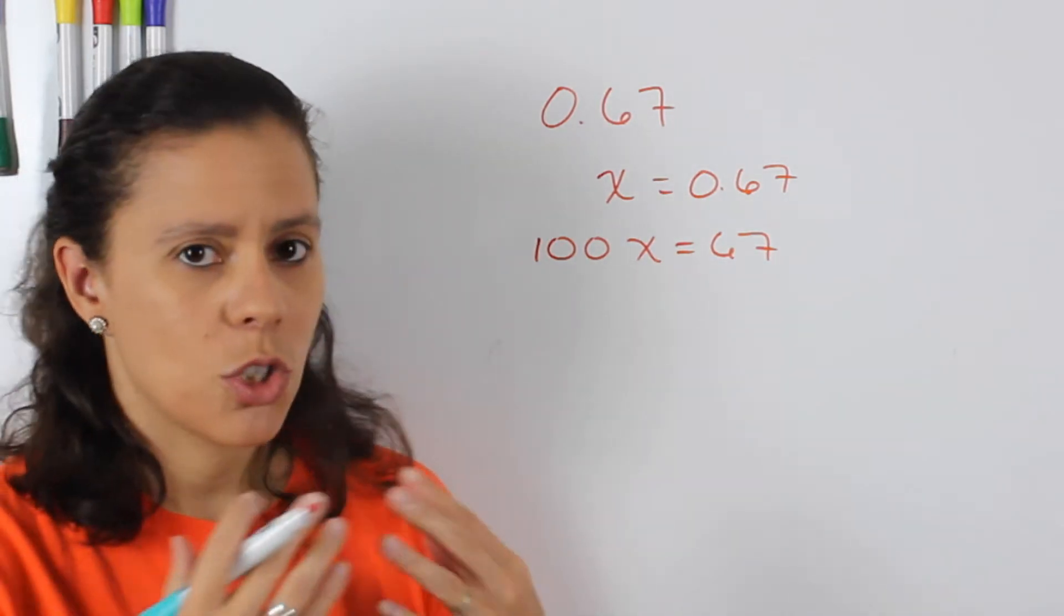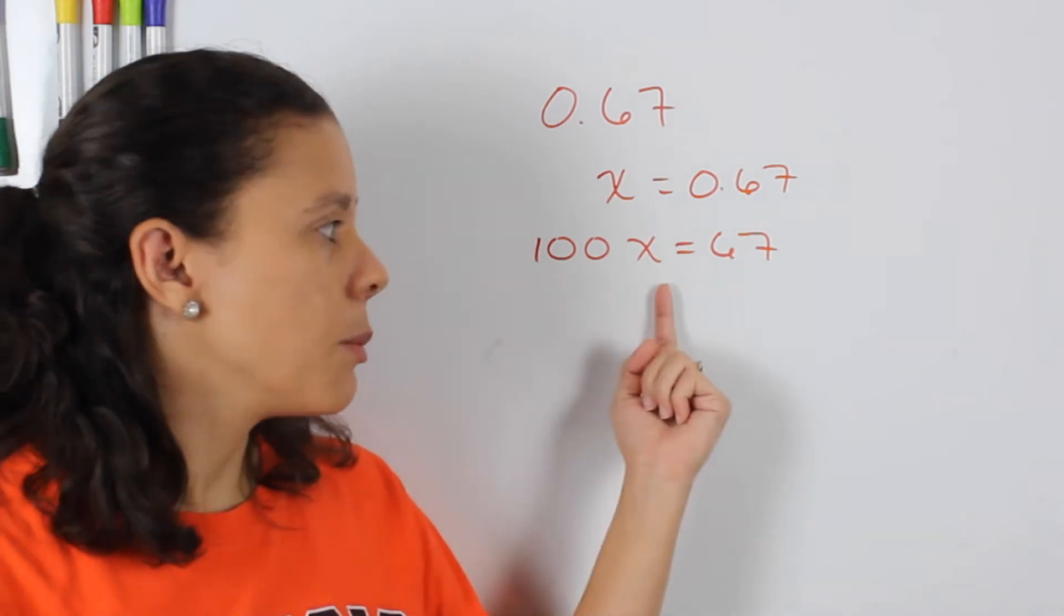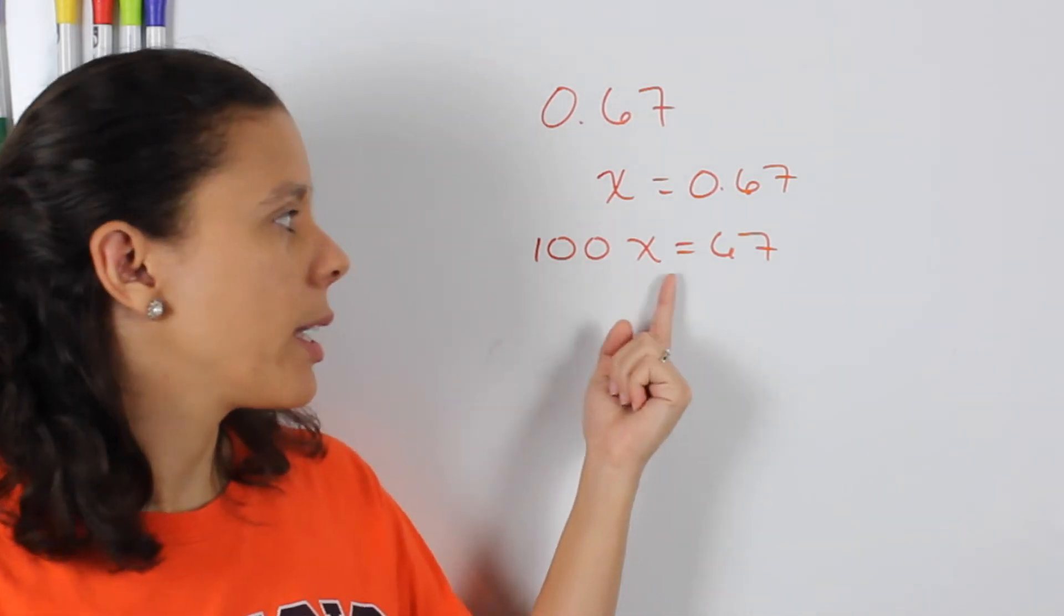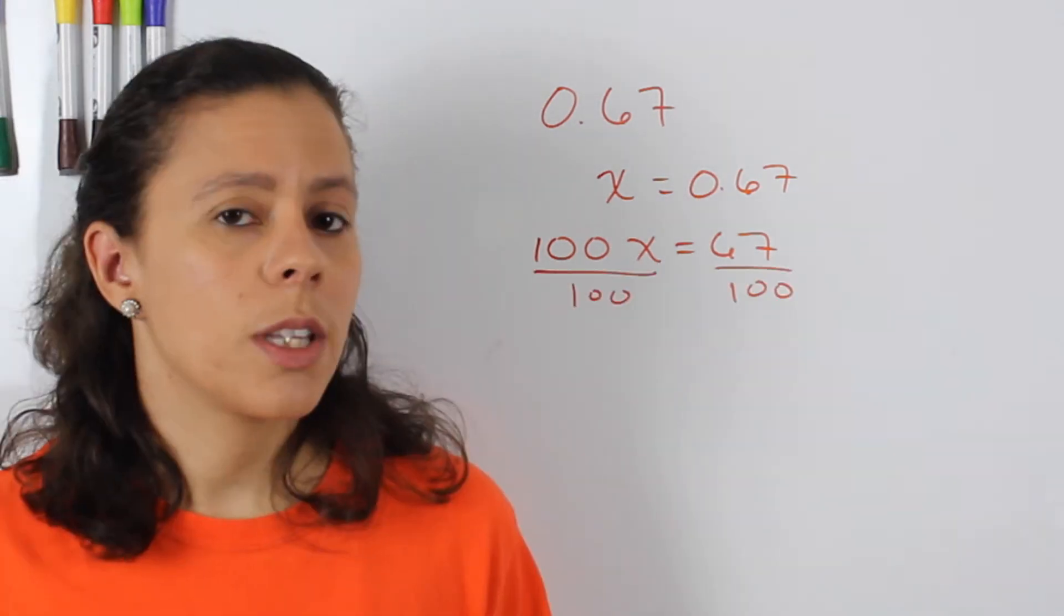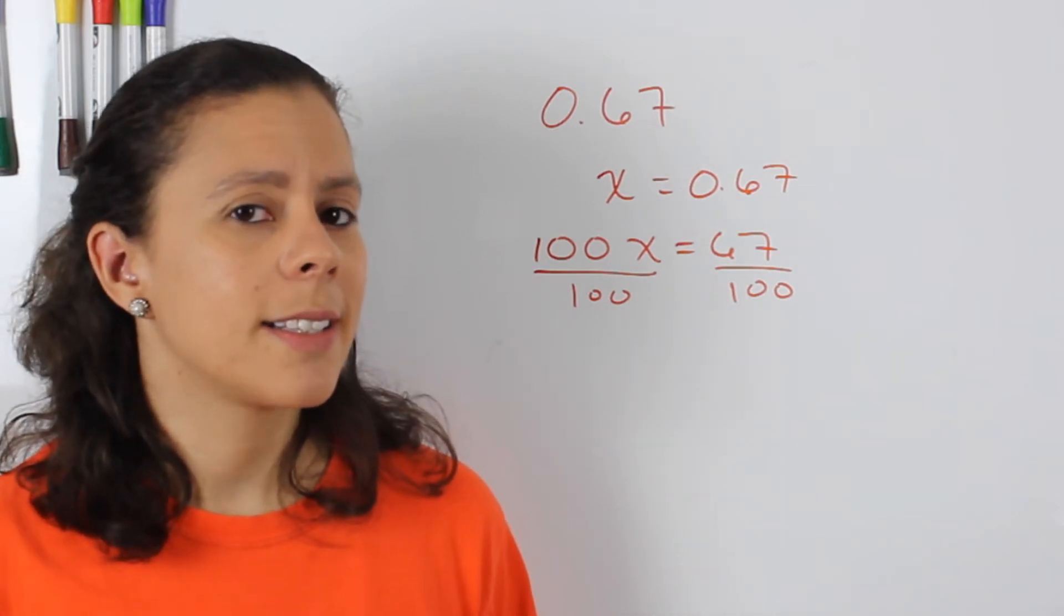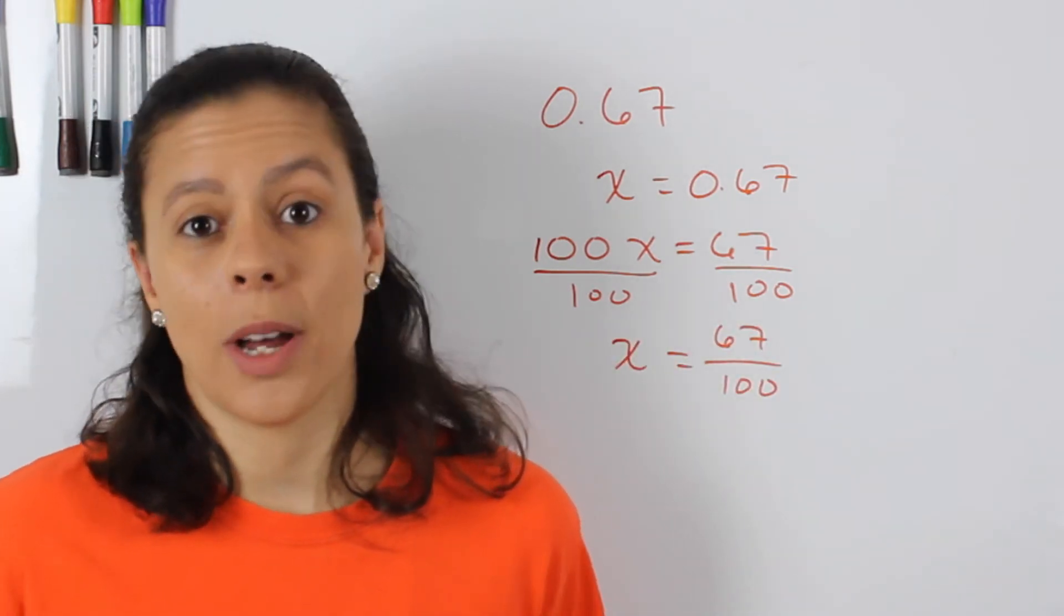Now just like with any other equation, we have a number that's being multiplied by the x. So the way that we get rid of it is by dividing it. So we divide by 100 on both sides, and we get that x is equal to 67 over 100.